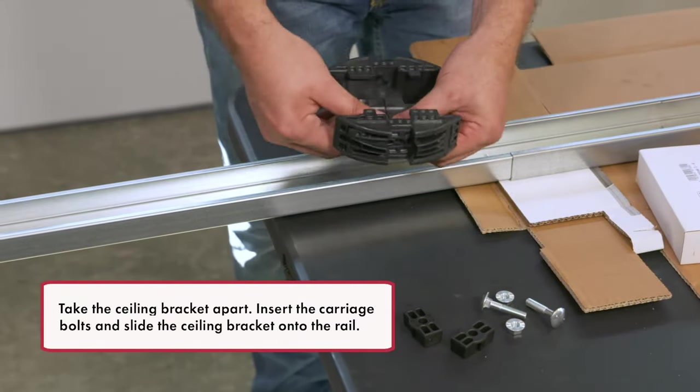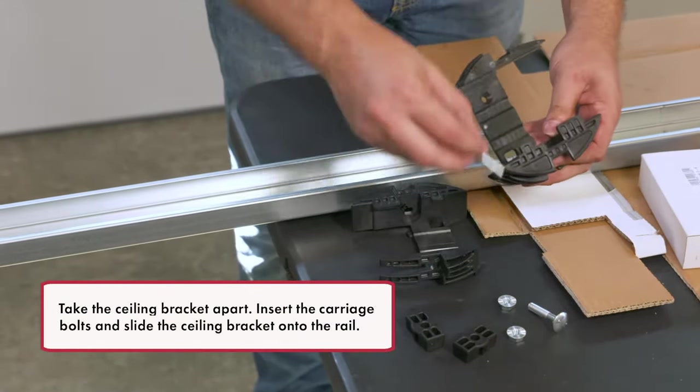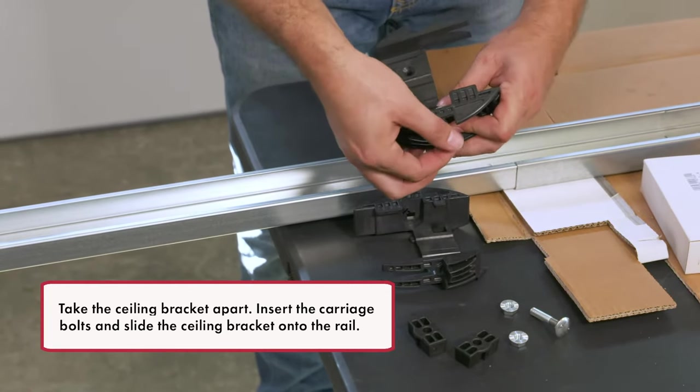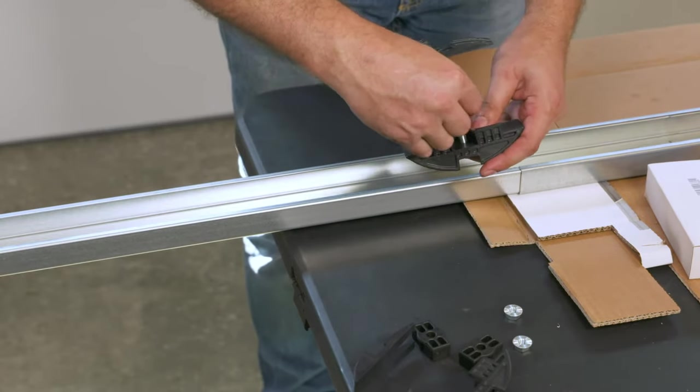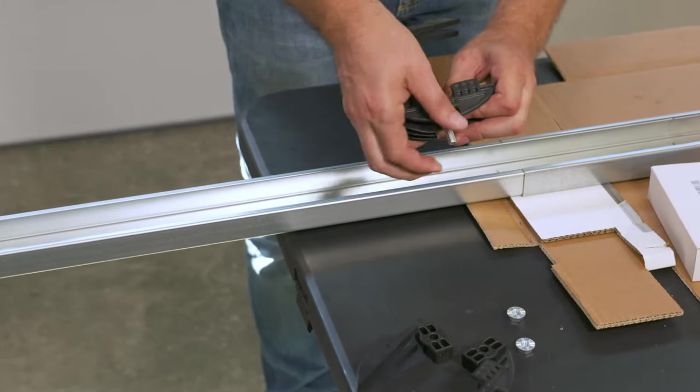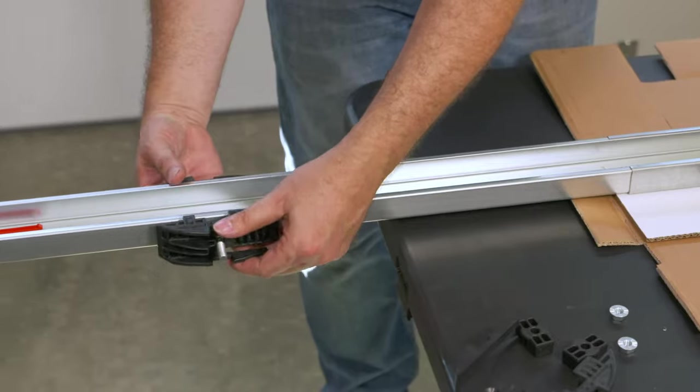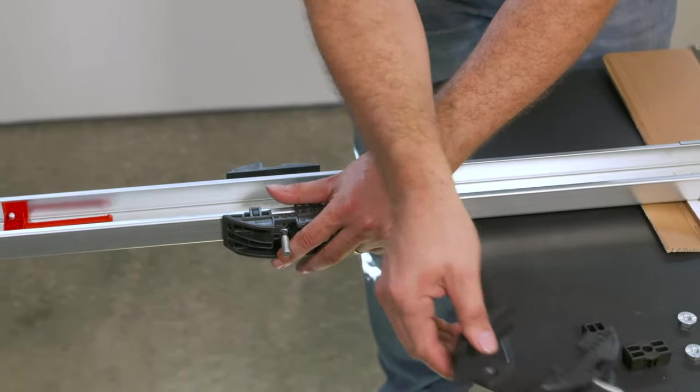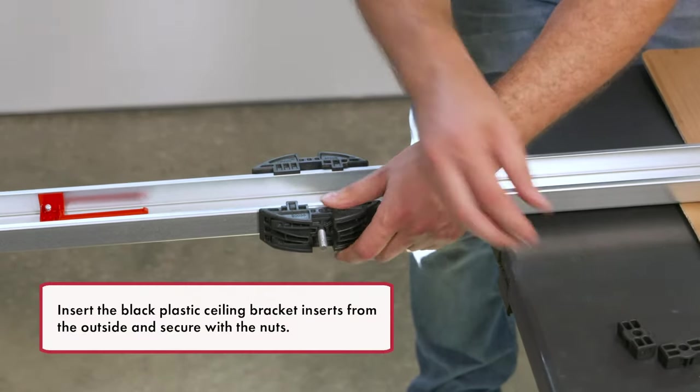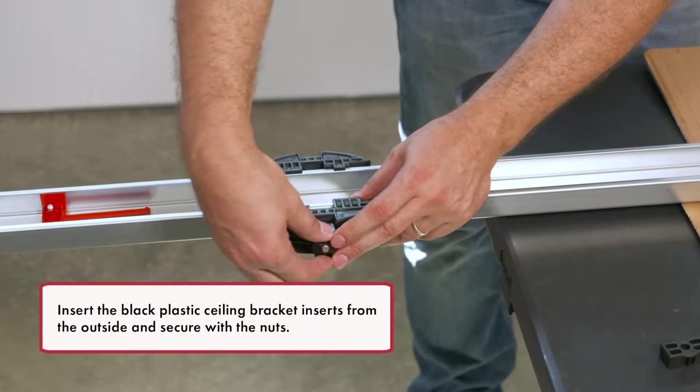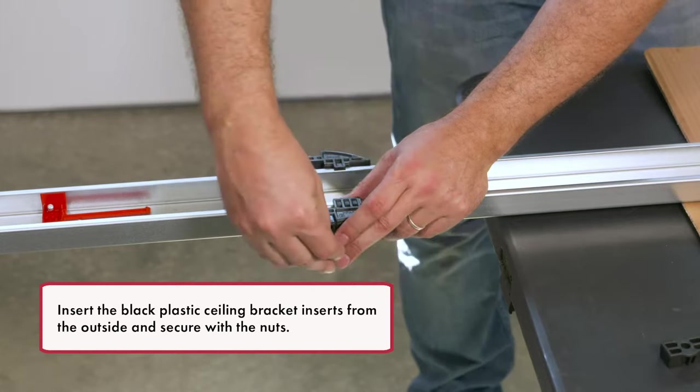Take the ceiling bracket apart. Insert the carriage bolts and slide the ceiling bracket onto the rail. Insert the black plastic ceiling bracket inserts from the outside and secure with the nuts.